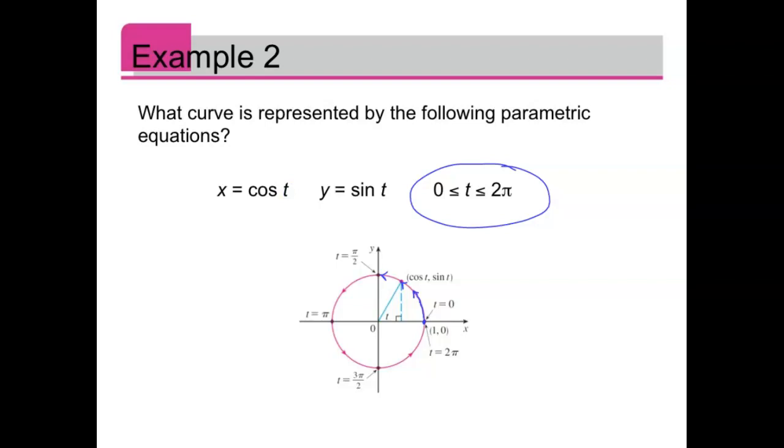If we square these, sine squared plus cosine squared equals 1. If we do a substitution, replacing cosine with x, we get x squared. If I replace sine with y, I get y squared, which is the equation of a circle with radius 1.